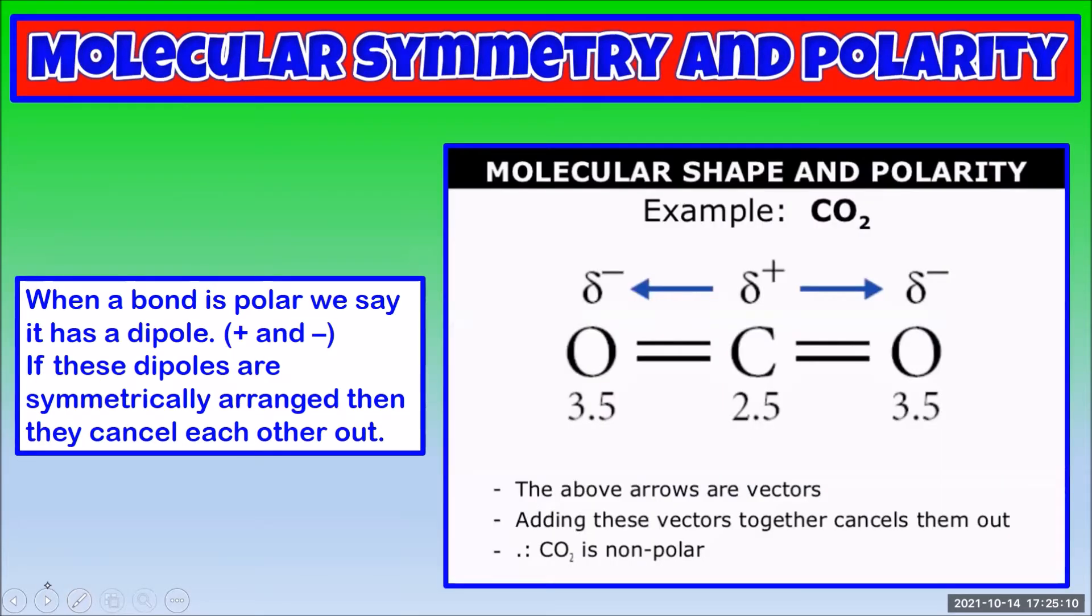The reason that a molecule can be non-polar even though it has polar bonds is that those polar bonds are in a symmetrical arrangement. If we consider each polar bond or dipole to be a vector, then the vector sum of the dipoles is zero. That means there is no overall charge vector or dipole on the molecule.